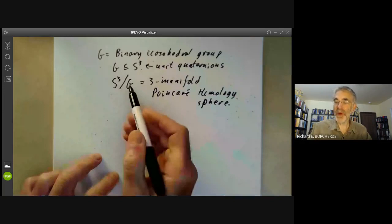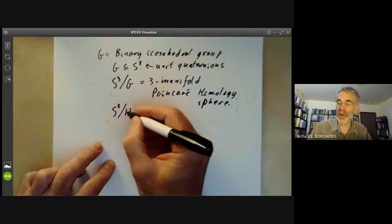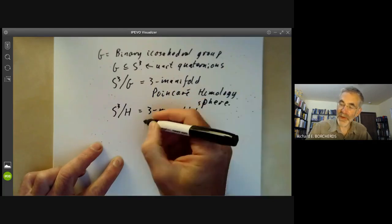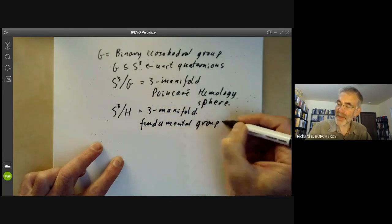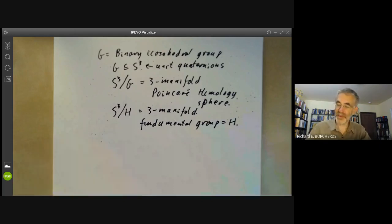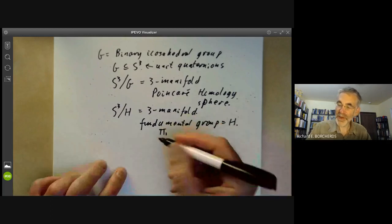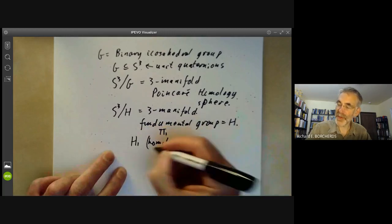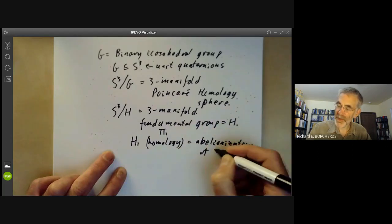Now you can form the quotient of S3 by any discrete group. There are quite a lot of them. For instance, you can take a cyclic group or the binary tetrahedral group. So this is always a three manifold and its fundamental group is easily seen to be just the group H. So we can obtain lots of three manifolds with finite fundamental groups. So the fundamental group is the first homotopy group and it also has a homology group H1 and the homology group is just the abelianisation of the fundamental group Pi1.